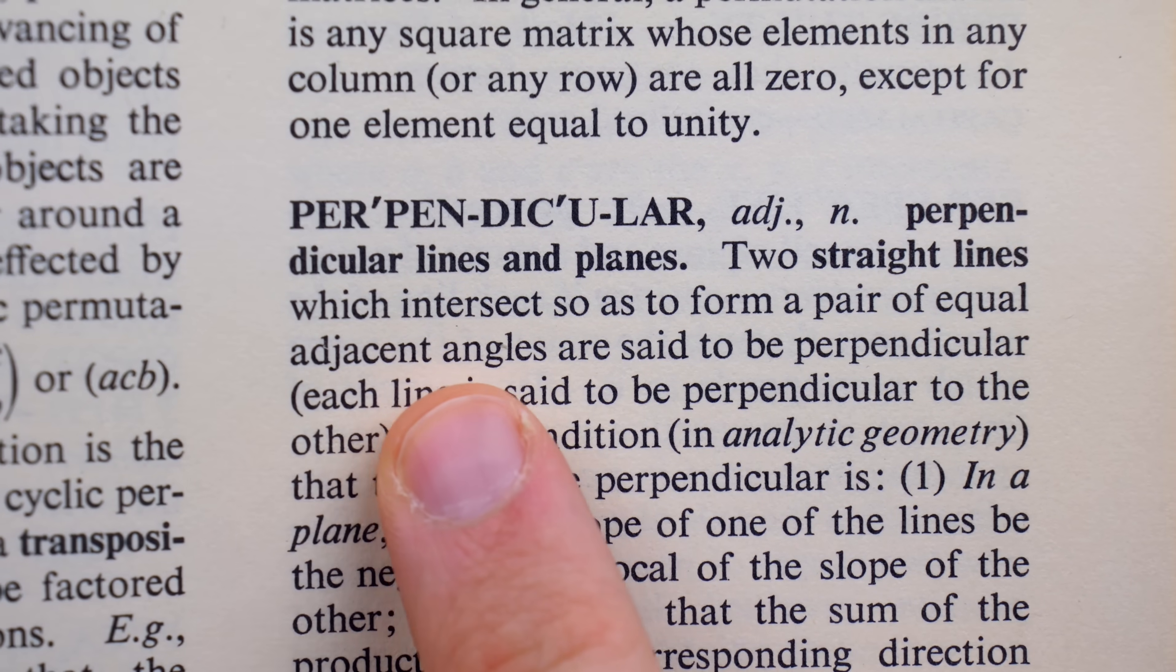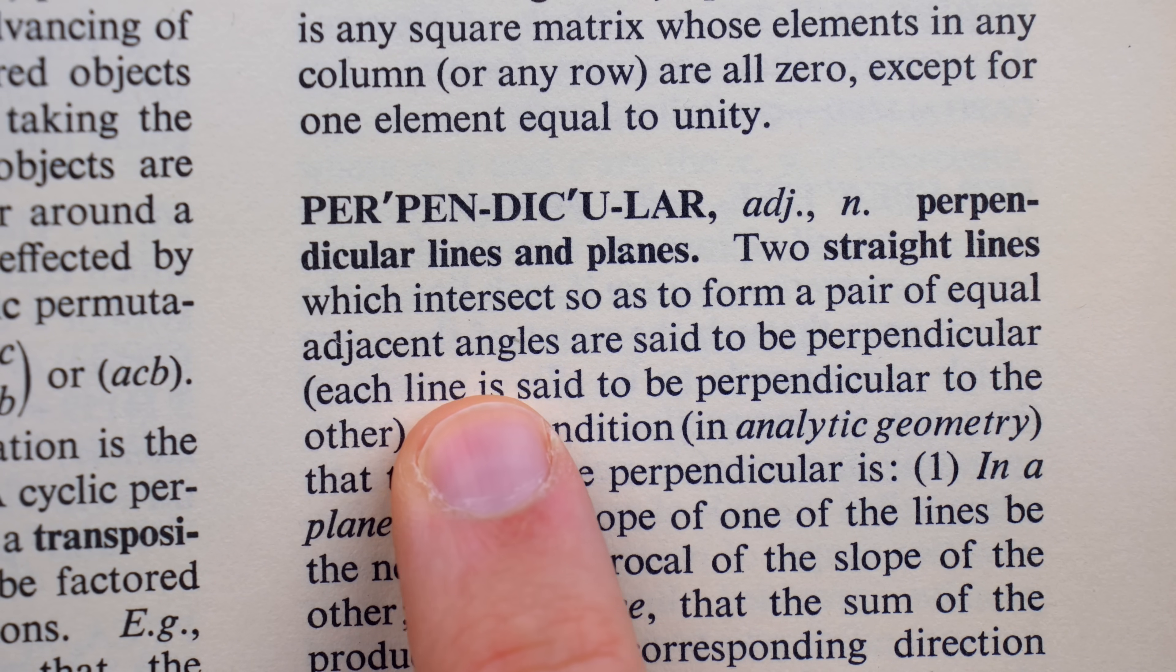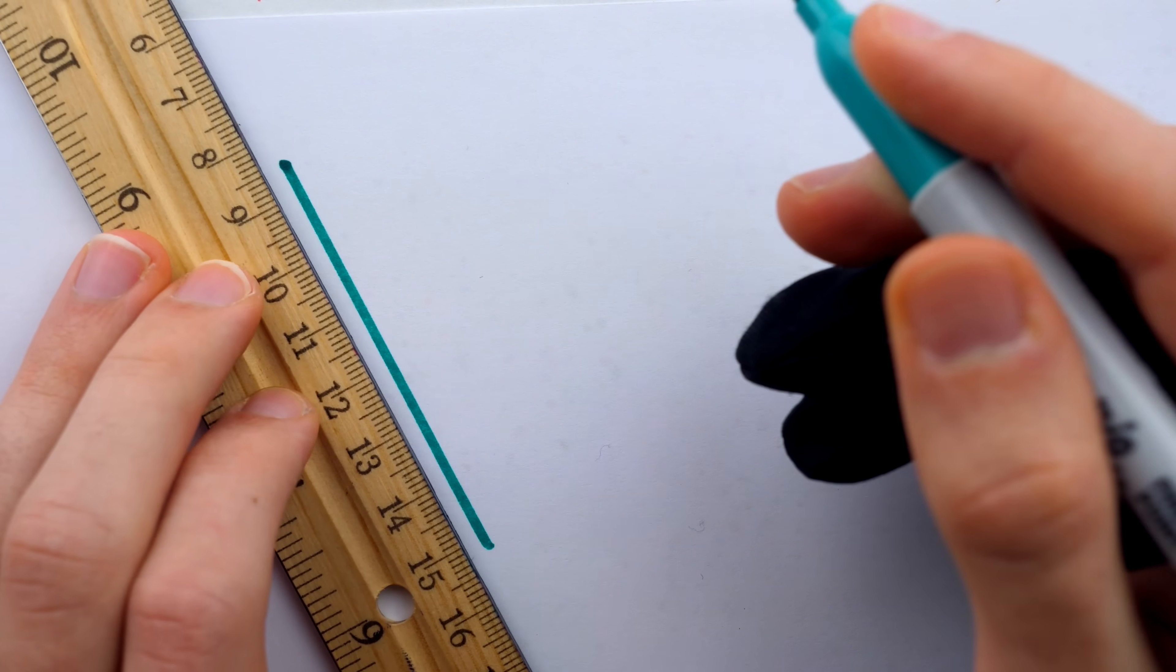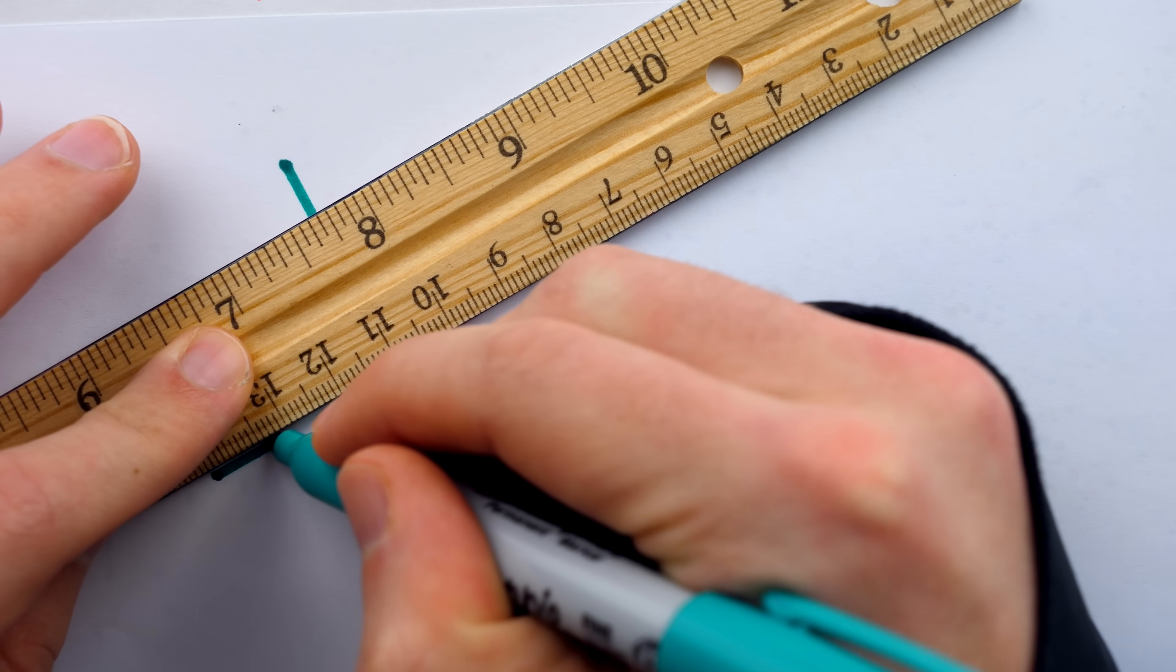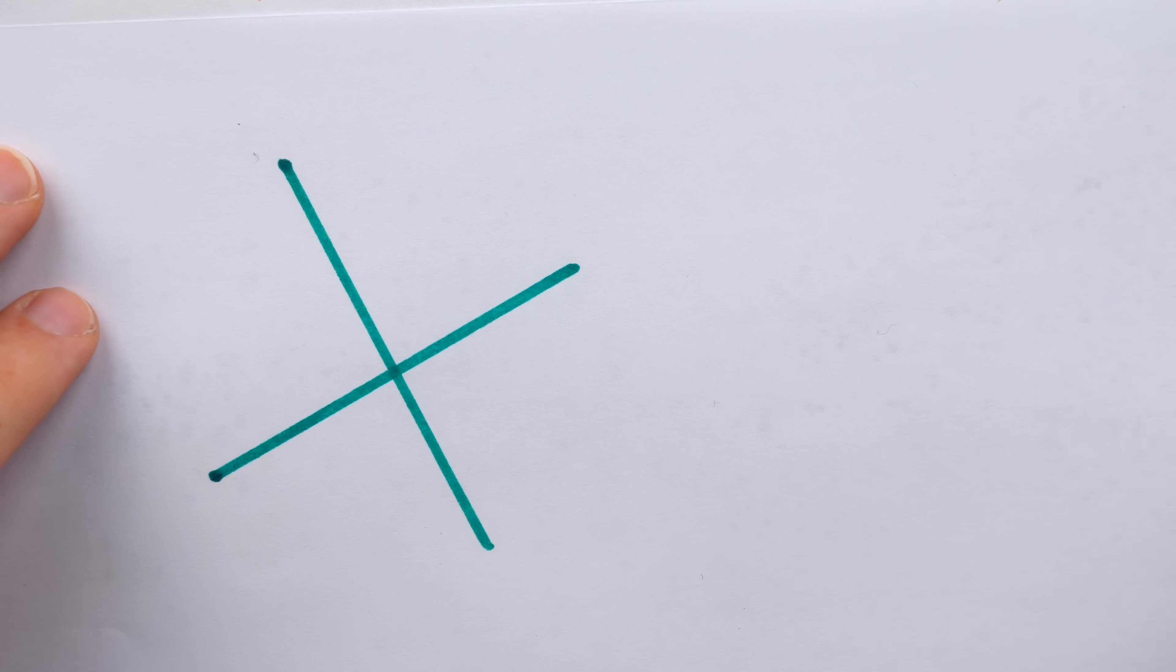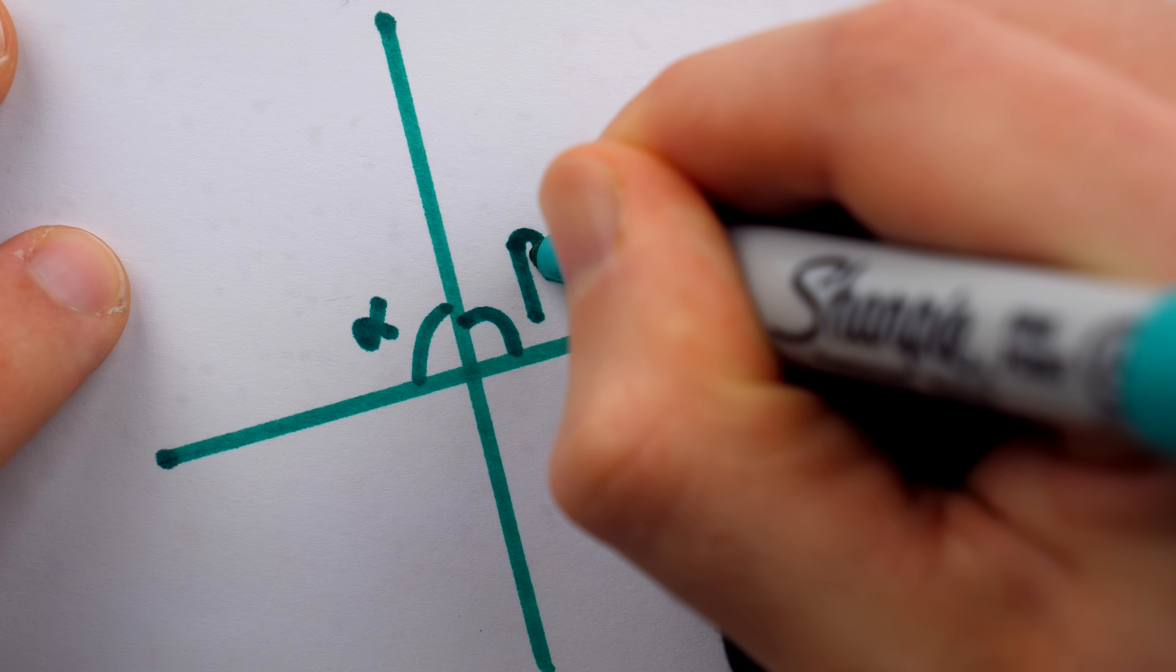Two straight lines which intersect so as to form a pair of equal adjacent angles. And of course, in this state of affairs, those equal adjacent angles must add up to 180 degrees. If this angle is alpha and this angle is beta,